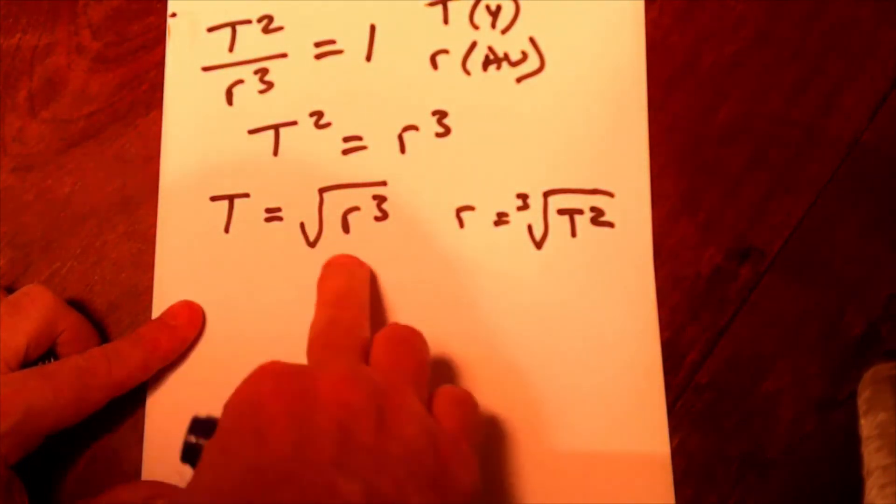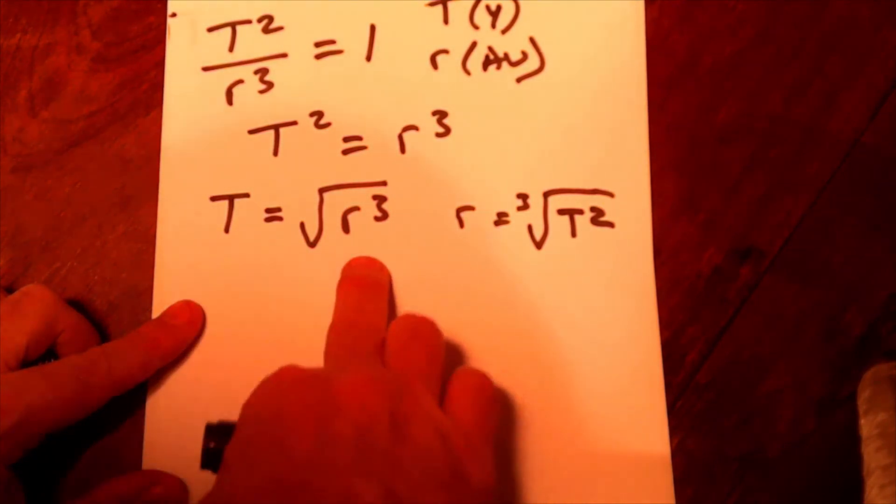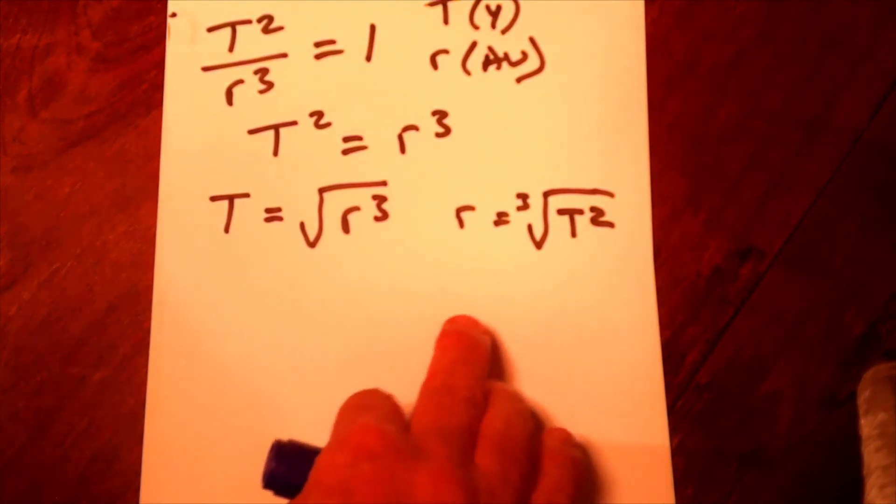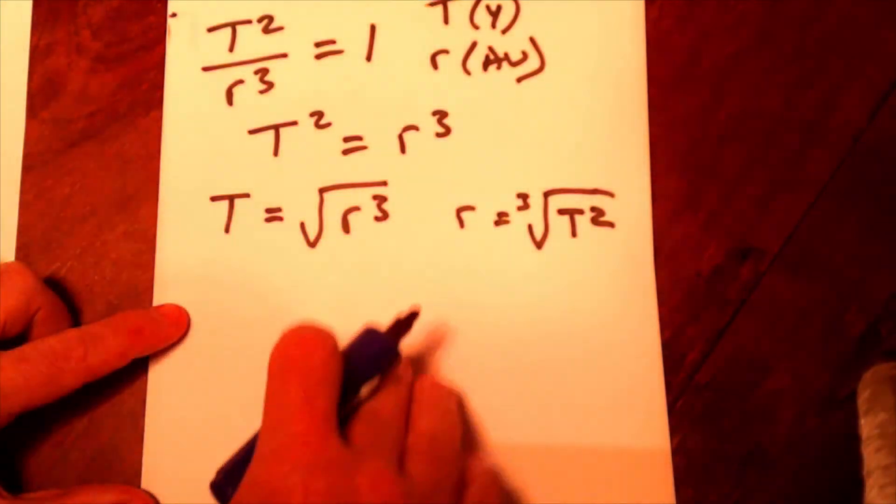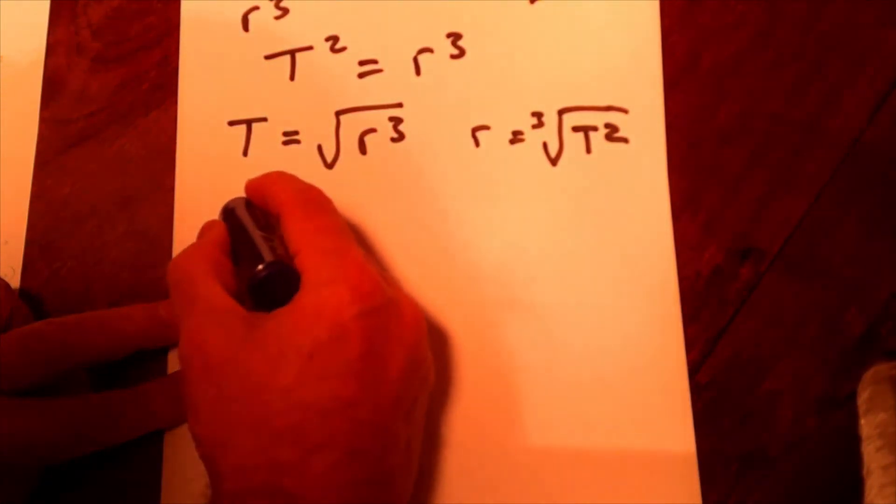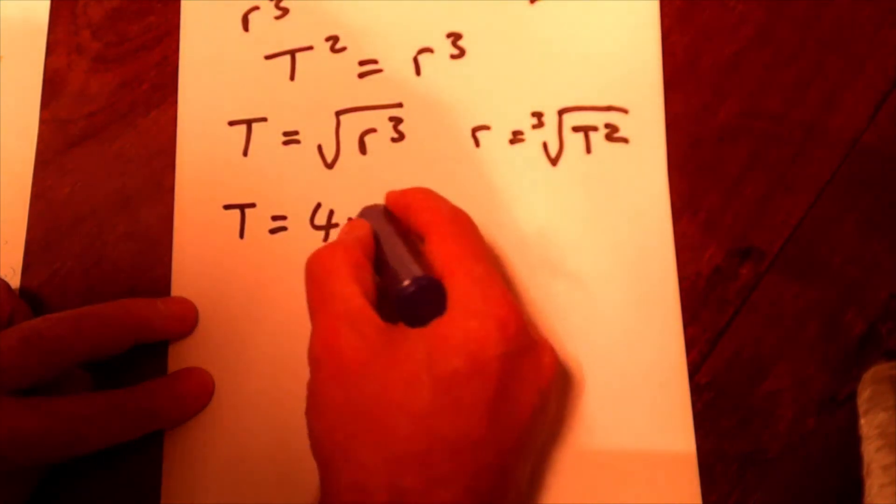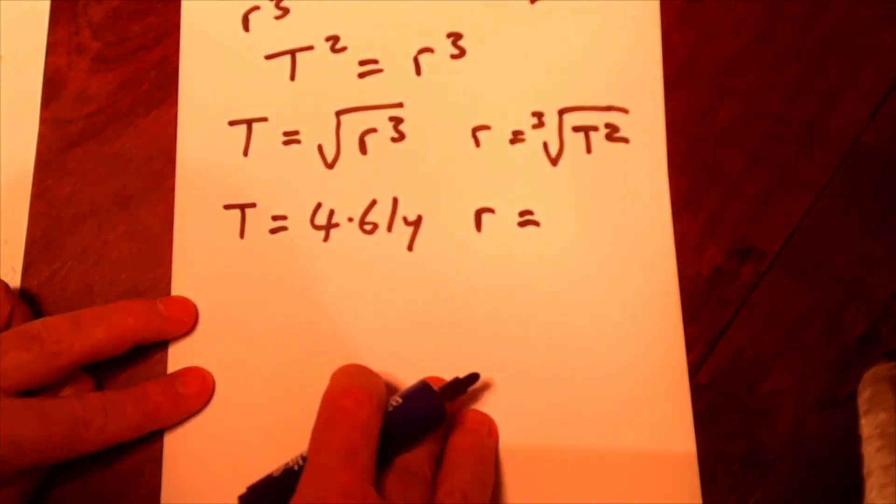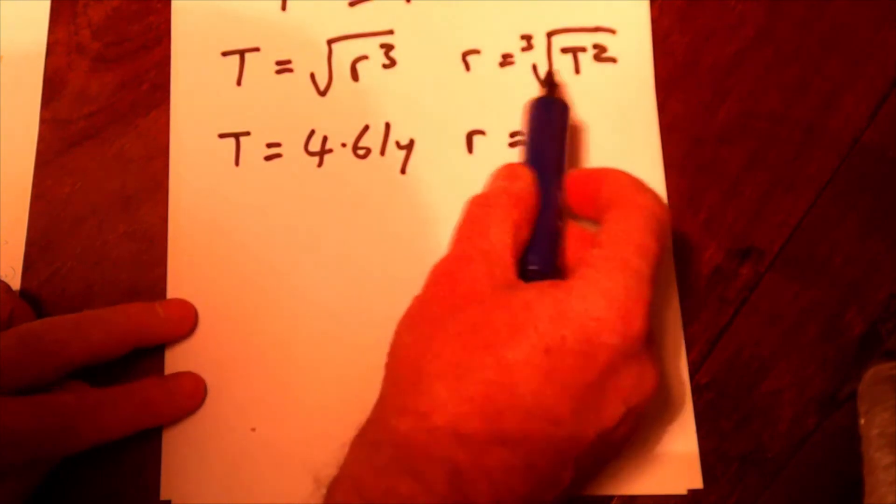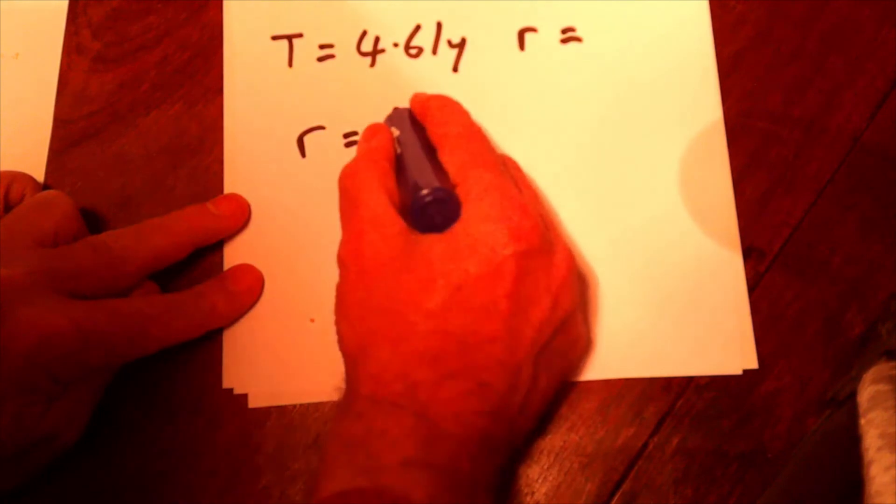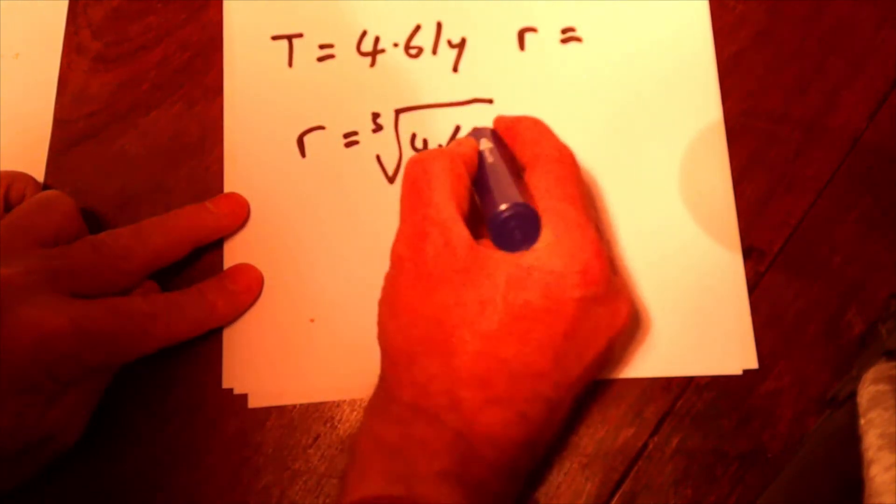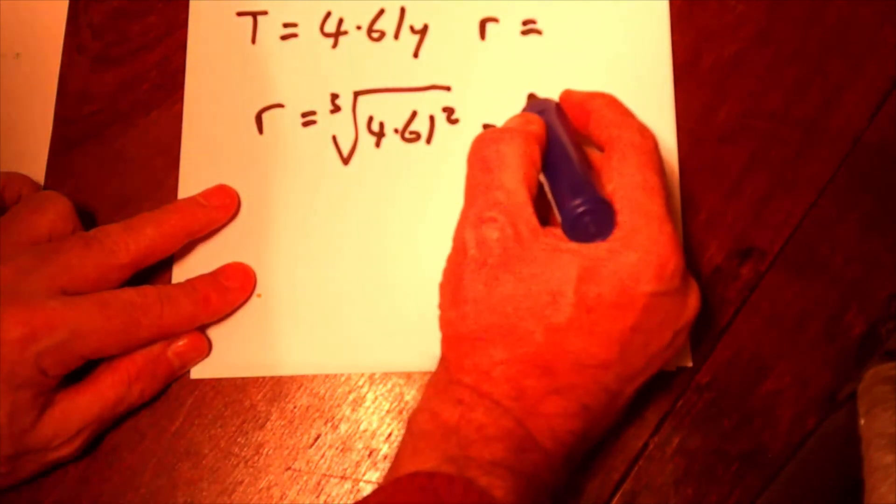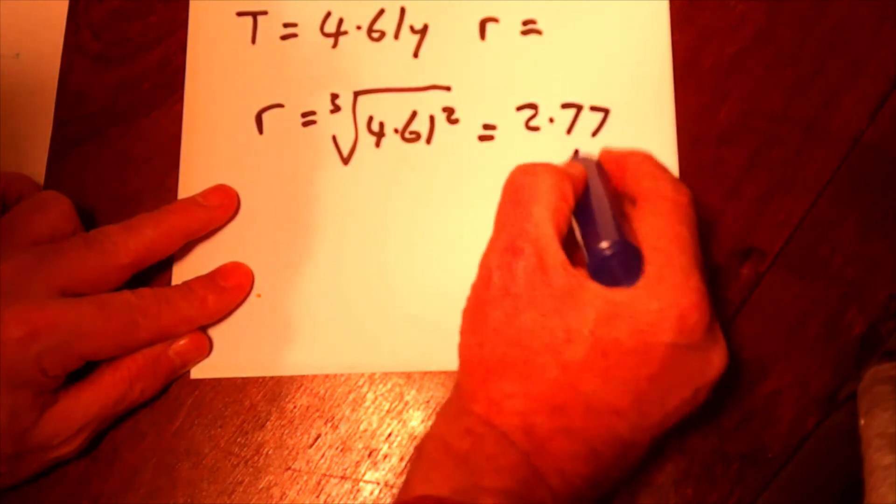So, if you know R and you want to work out T, then you can just use this equation here. If you know T, and you want to work out R, then you can use this equation here. Okay. For example, let's say an object is observed which has a period of 4.61 years. And we would like to know what radius, what is the radius of its orbit. So, using this equation here, R is the cube root of T squared. So, that means that R is going to be the cube root of 4.61 squared. So, do that on your calculator. And what you will get is 2.77 astronomical units.